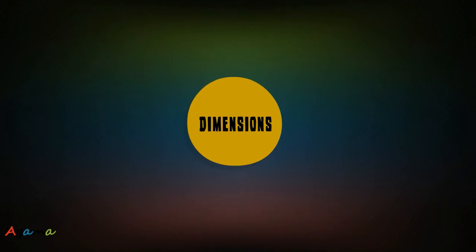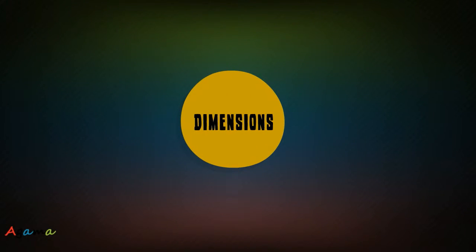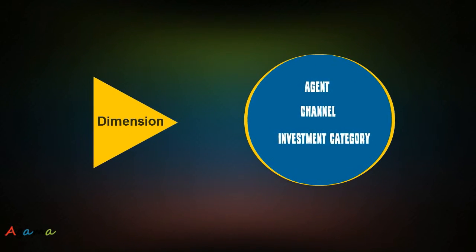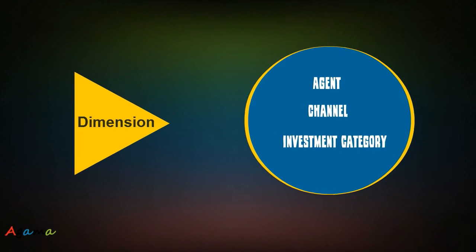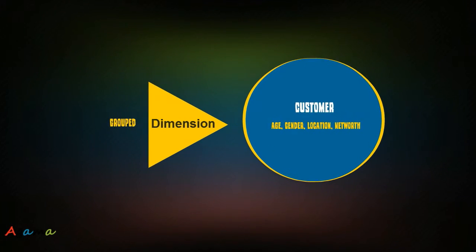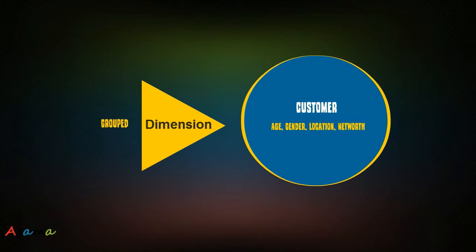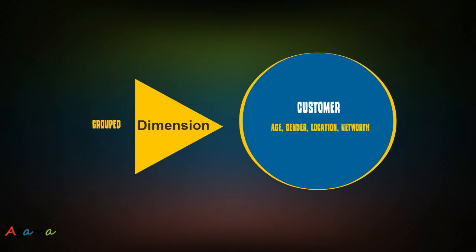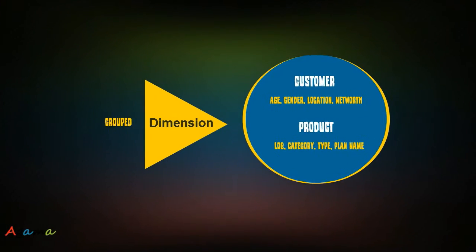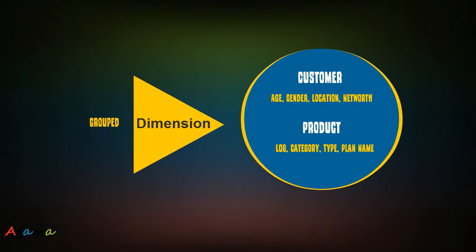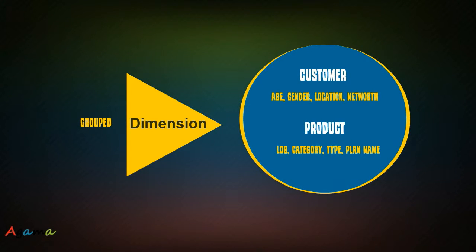Dimensions provide context to measures. Dimensions can be individual, such as agent or channel. A dimension can have a dictionary — for example, channel, where the dictionary consists of a list of channels. Related dimensions are grouped together: a customer group may have dimensions like age, gender, and net worth, while a product group may have dimensions like line of business, product category, and product type.